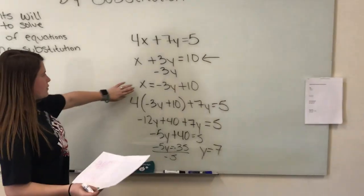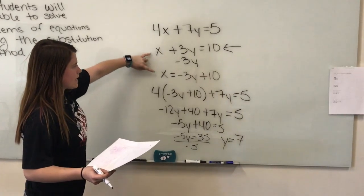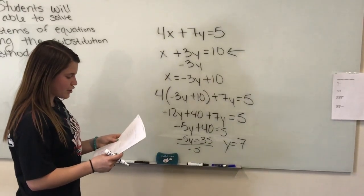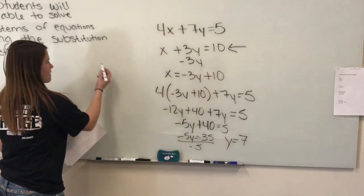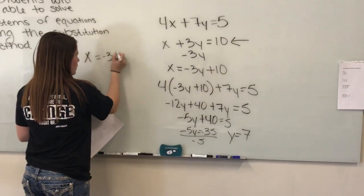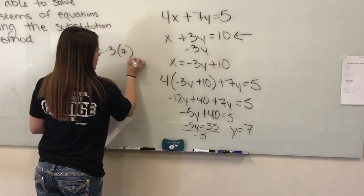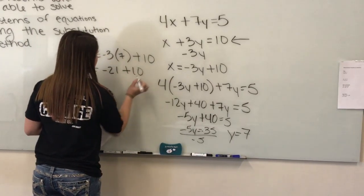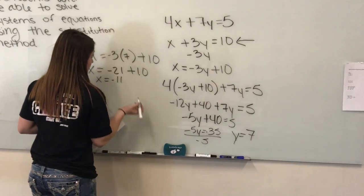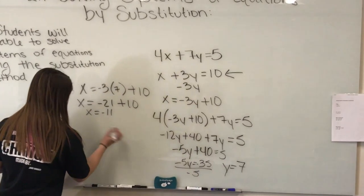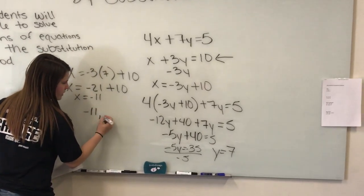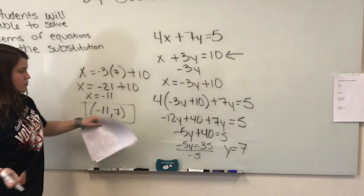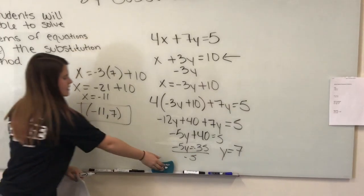Now choose any equation with both variables to solve for x. Since the two equations are equal to each other, I'll use the isolated equation: x equals negative 3 times 7 plus 10, so x equals negative 21 plus 10, which means x equals negative 11. Write your answer in ordered pair form — x first, then y — so the answer is negative 11 and 7.